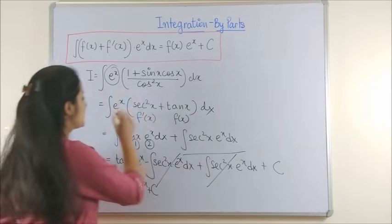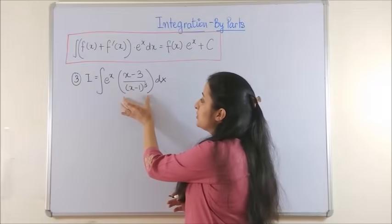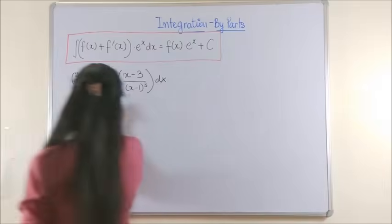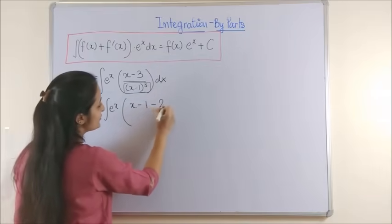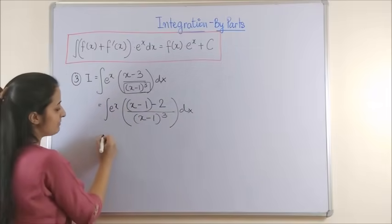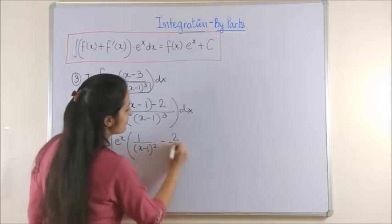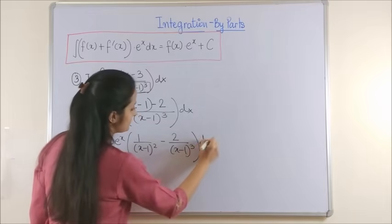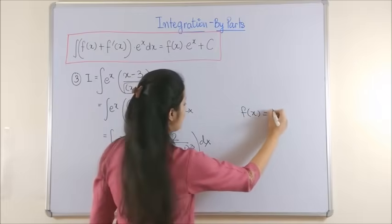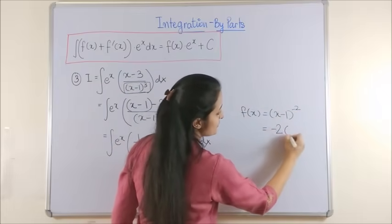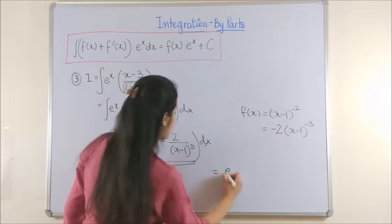Let's look at the third question and reduce it to this form once more. Your denominator is (x−1)³. Write x−3 as (x−1) − 2, and when we separate this out, it becomes 1/(x−1)² minus 2/(x−1)³. You have your function, which is 1/(x−1)², and the derivative of (x−1)^(−2) is −2·(x−1)^(−3), which is precisely the second term. Show the full process and check the answer.